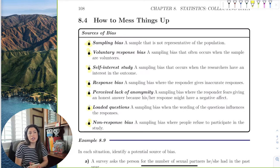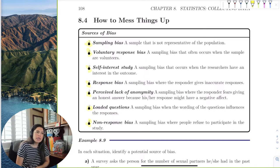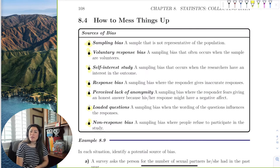Response bias means that the subject gives inaccurate responses due to lack of anonymity. That's where the question is very private or maybe the subject fears how their answer may be looked at or affected.